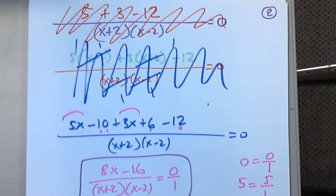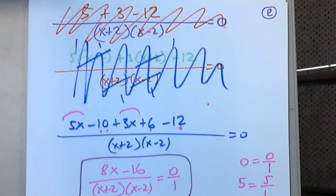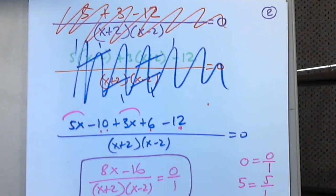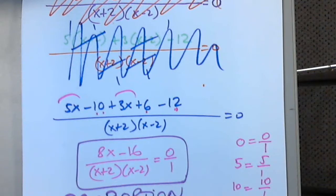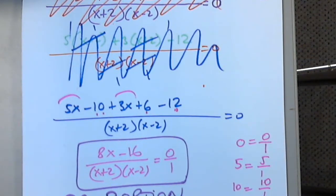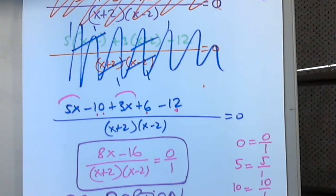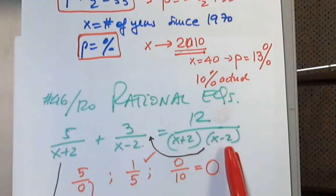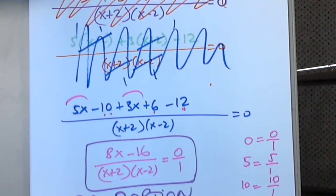A proportion is a fraction equal to another fraction — like a over b equals c over d. Only in a proportion: if this is true, then the cross-products will be true. So I changed this rational equation into a proportion and can now cross-multiply.